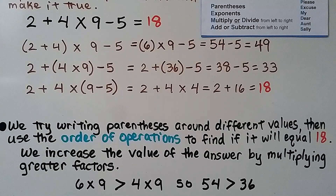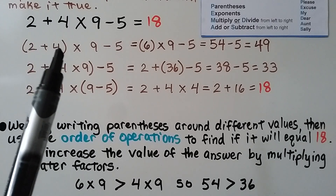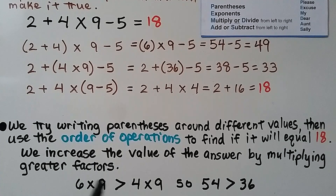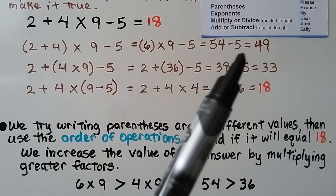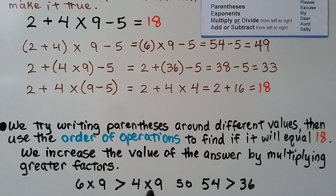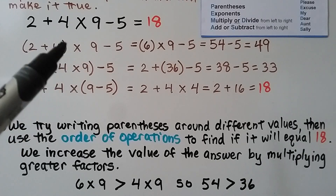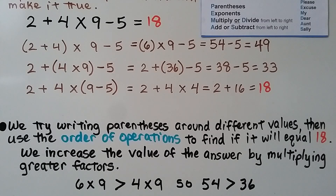We try writing parentheses around different values, then use the order of operations to find if it will equal 18. Notice that we increase the value of the answer by multiplying greater factors. With (2 + 4) in parentheses, we had 6 times 9, giving 49. With (4 × 9) in parentheses, we had 36, giving 33. The answer 49 is greater than 33 because 6 times 9 is greater than 4 times 9 — 54 is greater than 36. By grouping them differently, we create larger factors and a larger answer.